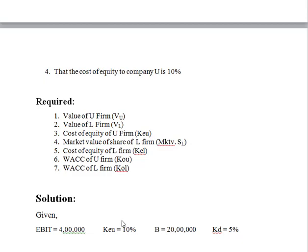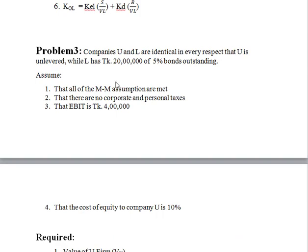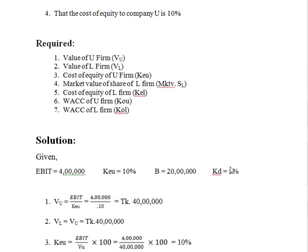We have KAU at 10%, and the cost of equity of U is 10%. Let's determine the value of the unlevered firm. KEU is 10%, which is 0.10, and EBIT is 40 lakhs. So the value of the unlevered firm equals EBIT divided by KEU.